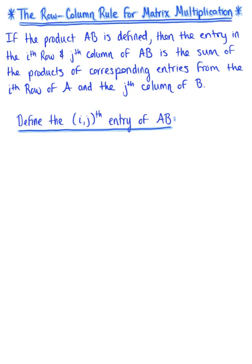Now that we have seen the formal definition for matrix multiplication, we need to establish a computation-ready definition — in other words, a shortcut. The shortcut here is the row-column rule for matrix multiplication. You've seen this before: the row-column rule for matrix multiplication is simply the dot product. It's the same rule that we use when multiplying a matrix by a vector.